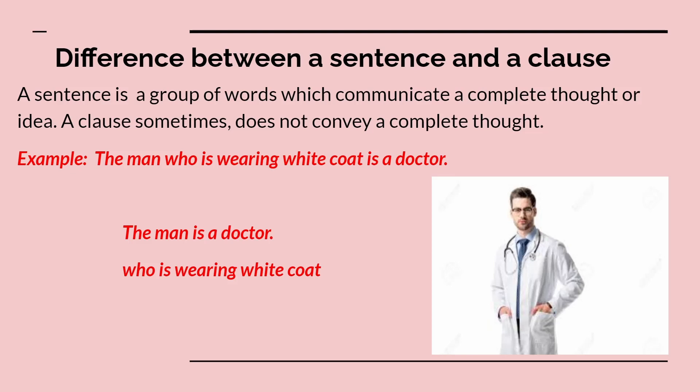'Who is wearing white coat' — we don't know who we are talking about unless we use it with the main sentence. Therefore, a clause is a group of words that contains a subject and a predicate, and a sentence is a group of words that expresses a complete thought. A clause can sometimes act as a sentence — such clauses are called independent clauses. The most important thing to remember: every sentence is a clause because every sentence has a subject and a verb, but every clause is not a sentence.